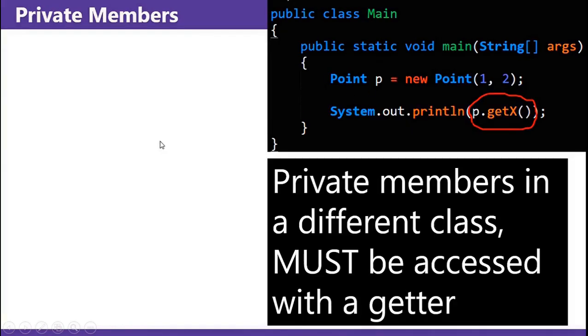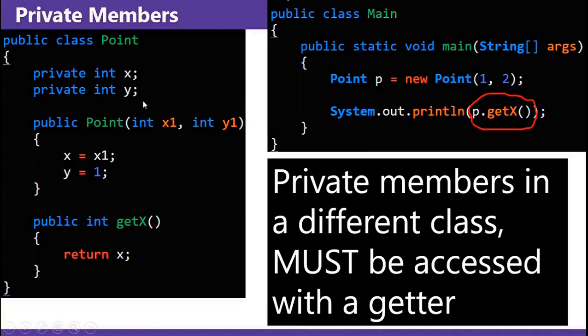Private members. Private members in a different class must be accessed with a getter. So you see this x and y member are private. So to access x in this different class, you gotta use getX. You can't just do p.x.